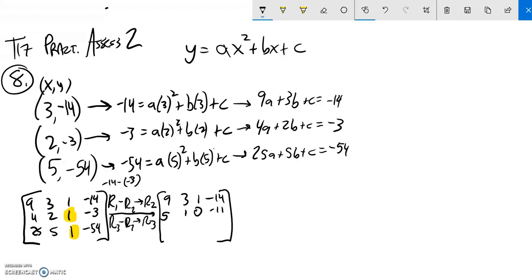All right, so next one. Row 3 minus row 2. So 25 minus 4 is 21. 5 minus 2, that's 3. 1 minus 1 is 0. Negative 54 minus negative 3 is negative 51.